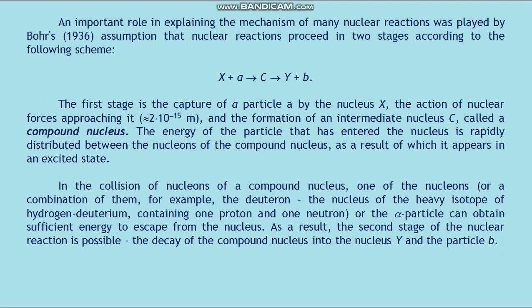The energy of the particle that has entered the nucleus is rapidly distributed among the nucleons of the compound nucleus, resulting in the compound nucleus appearing in an excited state. In collisions of nucleons within the compound nucleus, one nucleon or a combination of them — for example, a deuteron (containing one proton and one neutron) or an alpha particle — can obtain sufficient energy to escape. This constitutes the second stage: the decay of the compound nucleus into nucleus Y and particle B.